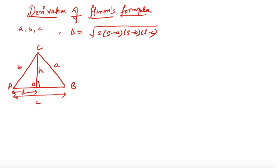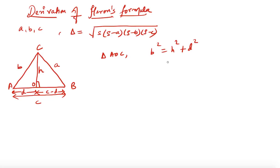We know that the complete base length is C, so the length of O-B will obviously be C minus D. Now consider triangle AOC. As per the Pythagoras theorem, since this angle is 90 degrees, I can write B squared equals H squared plus D squared.